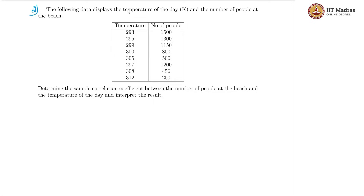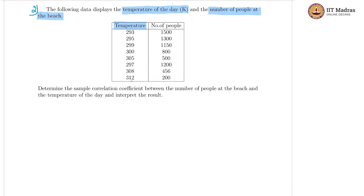For our second question, we are given data regarding the temperature of the day and the number of people at the beach. The temperature is given in Kelvin — 293 Kelvin, 295 Kelvin, and so on — and this is the number of people who visited the beach on that day. We are supposed to determine the sample correlation coefficient between these two variables and interpret the result.